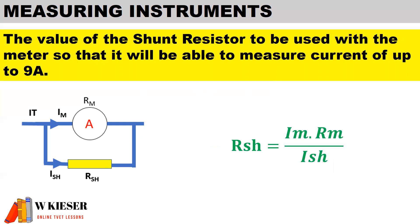The resistance of the meter remains the same in both parts of the question at 60 ohms. The total current being measured ranges from 0 to 9 amps, and the current flow through the meter is 15 milliamps. Converting milliamps to amps by dividing by 1000 gives us 0.015 amps.